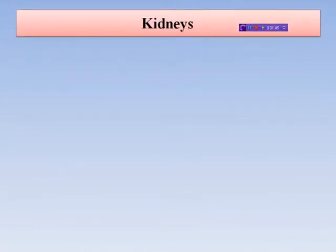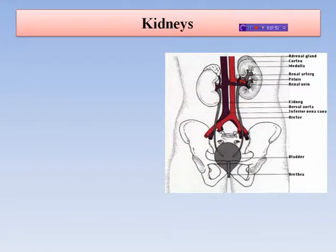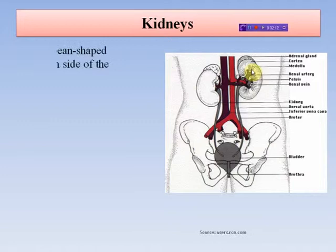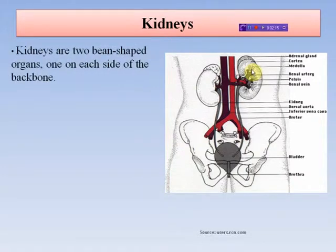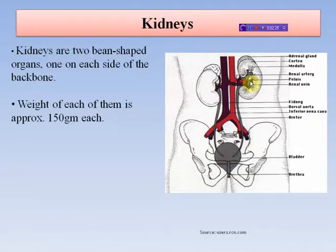First of all, let's look at the kidneys. Kidneys are two bean-shaped organs, one on each side of the backbone. You can see here a pair of bean-shaped kidneys. The weight of each kidney is approximately 150 grams each.